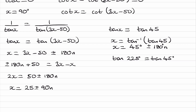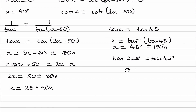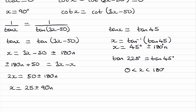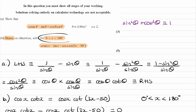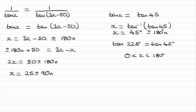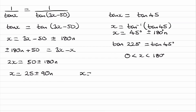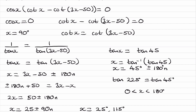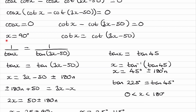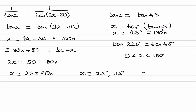The first solution is when n equals 0, giving x equals 25. Then n equals 1 gives x equals 115. n equals 2 gives x equals 205, but that's not in our domain so we ignore it. And we also had 90 degrees from earlier when cos x was equal to 0. So our final answers are x equals 25, 90, and 115 degrees.